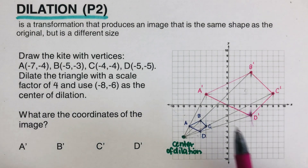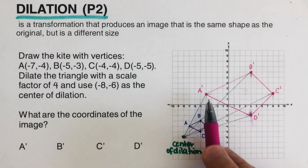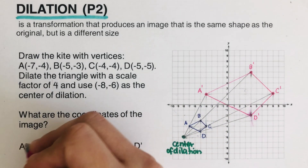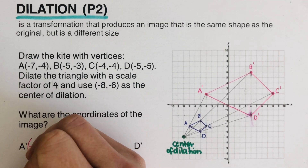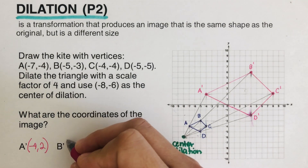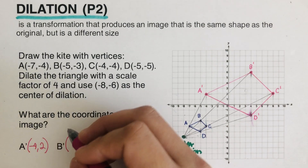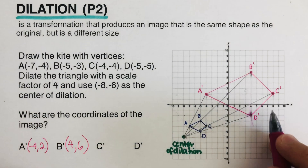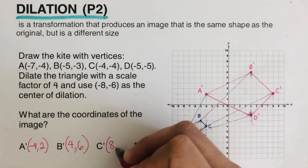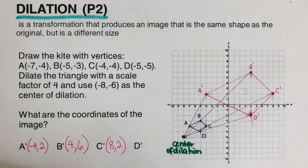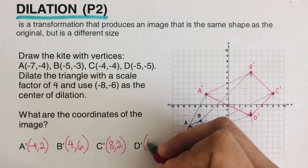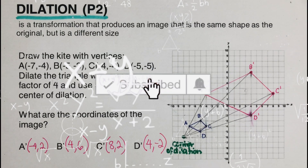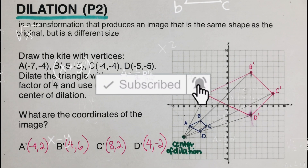We can now state the coordinates of the image. A prime is at negative four, two. B prime is at four, six. C prime is at eight, two. D prime is at four, negative two. If you find this video helpful, hit like and subscribe for more math videos. See ya!